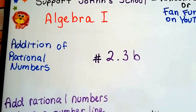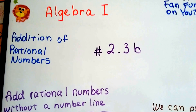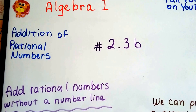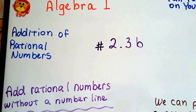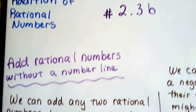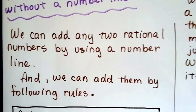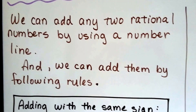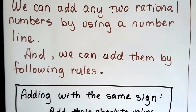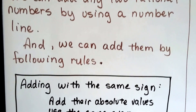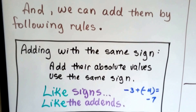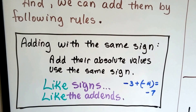Algebra 1, number 2.3b. In the last video we added rational numbers using a number line, and now we're going to do it without a number line. We saw we can add any two rational numbers by using a number line, and we can also add them by following rules and not using a number line.